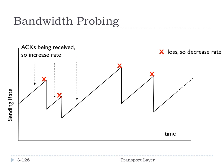TCP does something called bandwidth probing. The sending rate is going to increase over time until some loss event happens, like a lost packet. When the loss event happens, we cut back because we're in the congestion area. We need to make sure everyone can send their packets through. This creates a sawtooth pattern, where TCP is always probing for more available bandwidth. This is an intuitive description of the normal mode of operation in TCP.